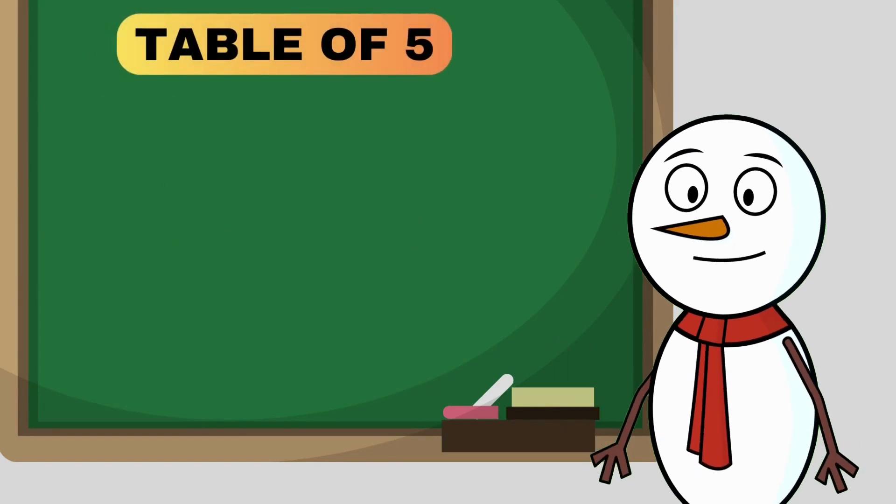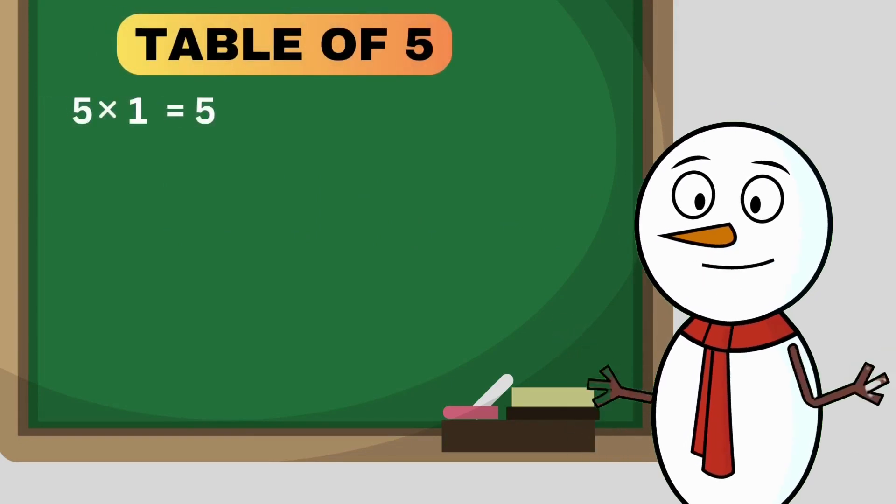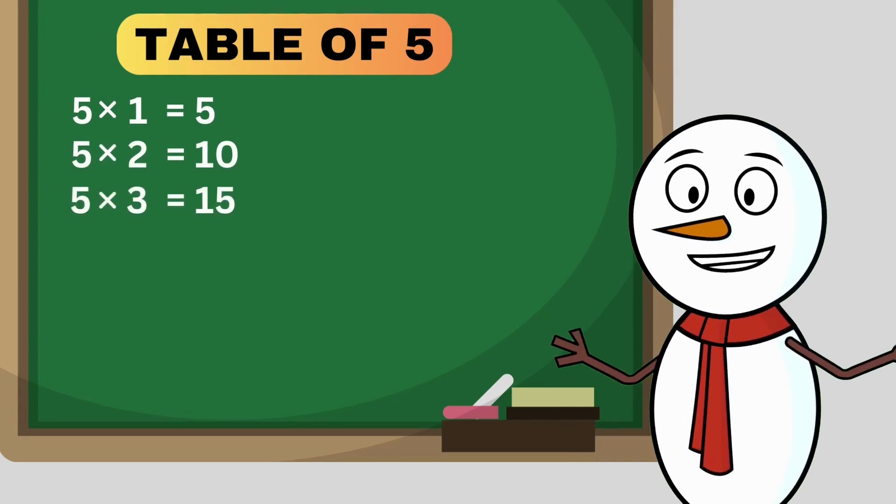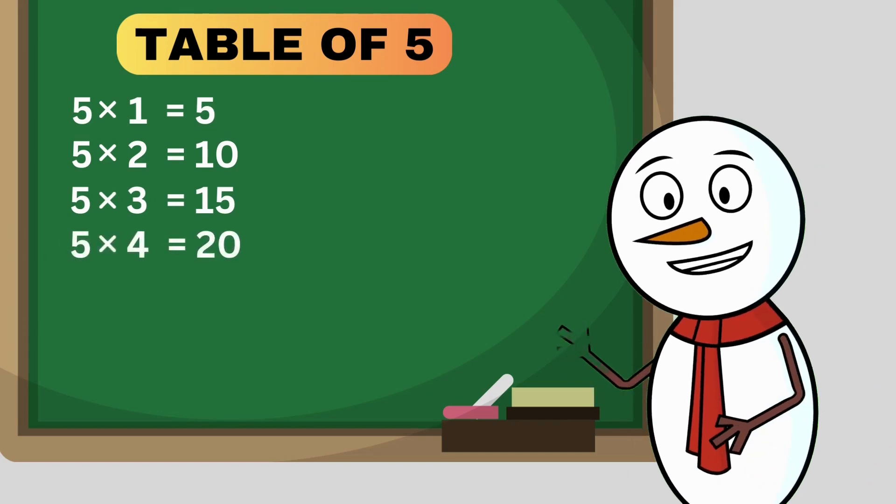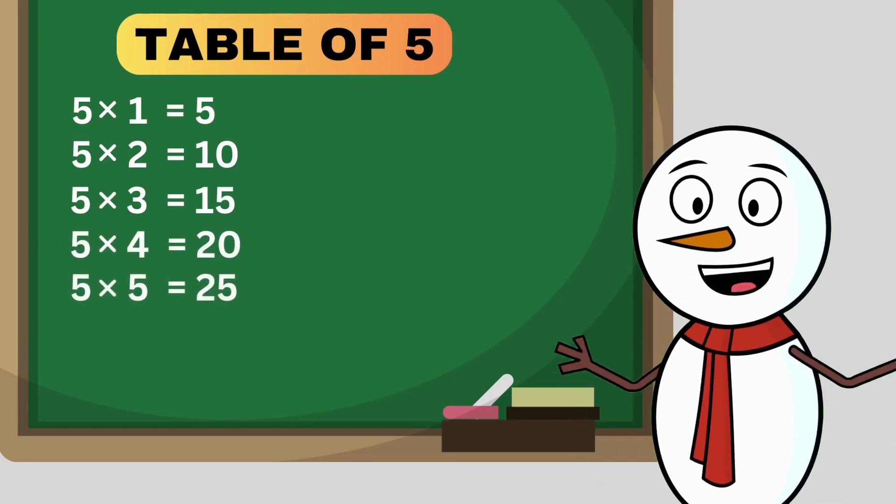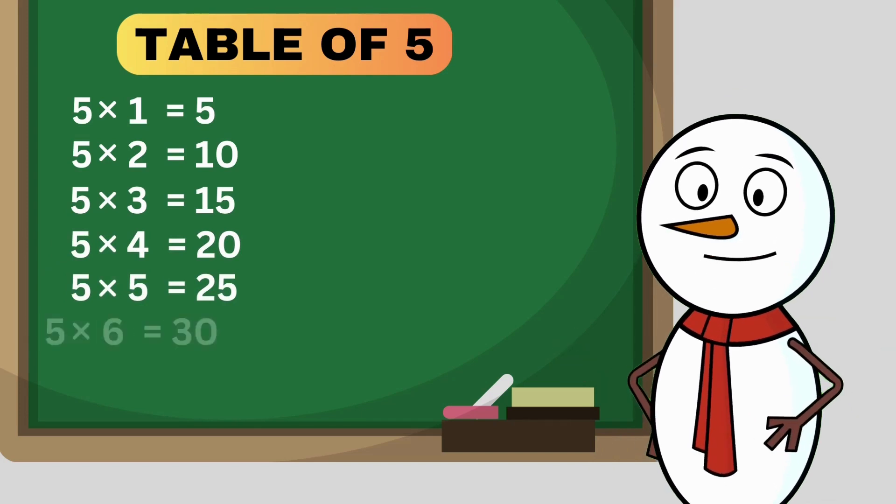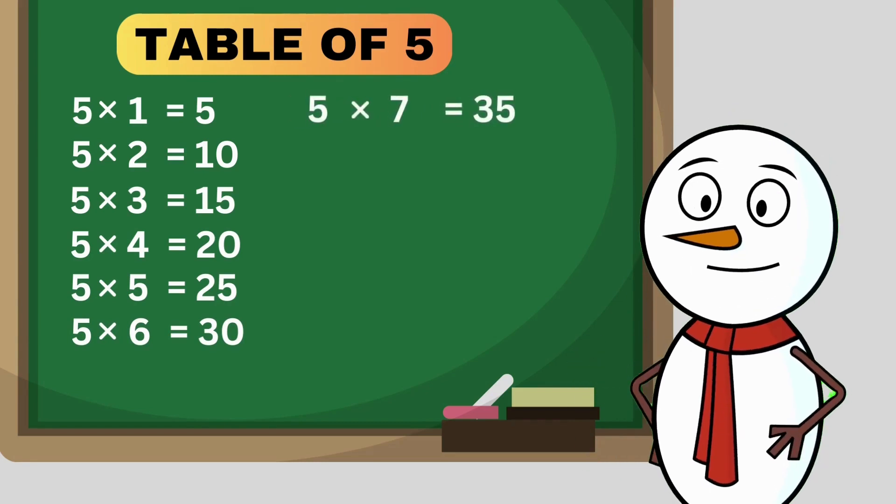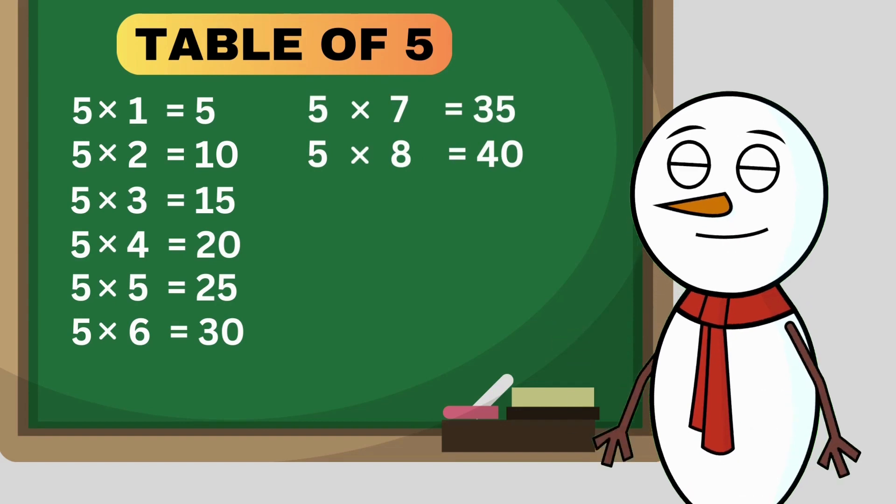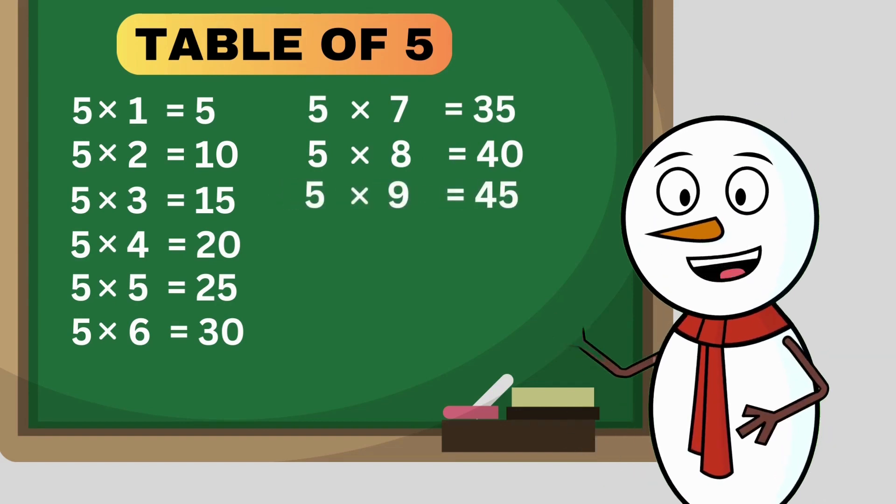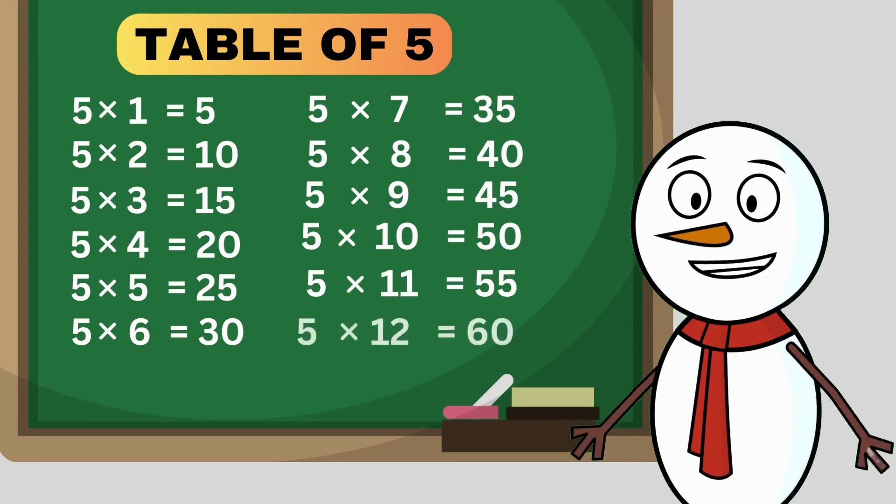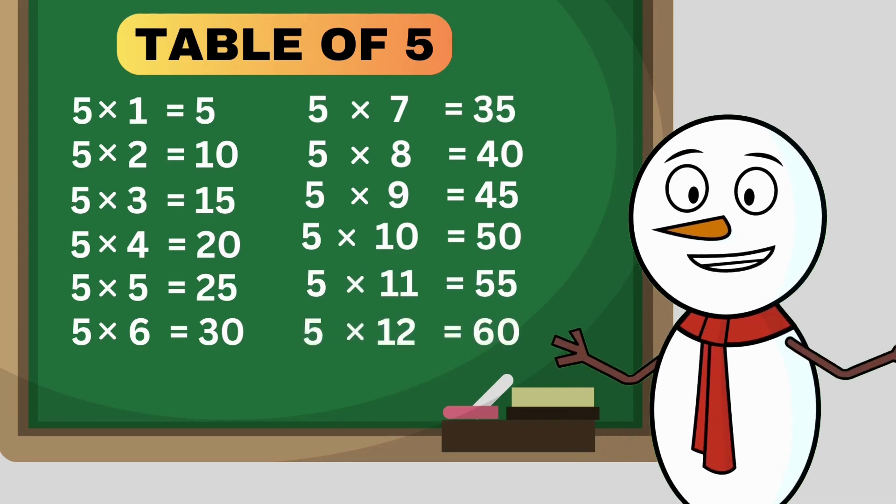Table of 5. 5 times 1 is 5, 5 times 2 is 10, 5 times 3 is 15, 5 times 4 is 20, 5 times 5 is 25, 5 times 6 is 30, 5 times 7 is 35, 5 times 8 is 40, 5 times 9 is 45, 5 times 10 is 50, 5 times 11 is 55, 5 times 12 is 60. Okay.